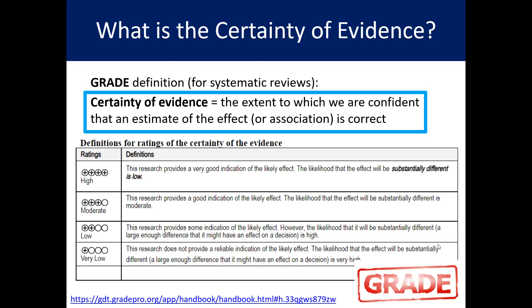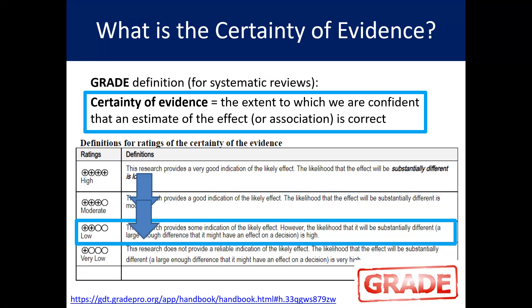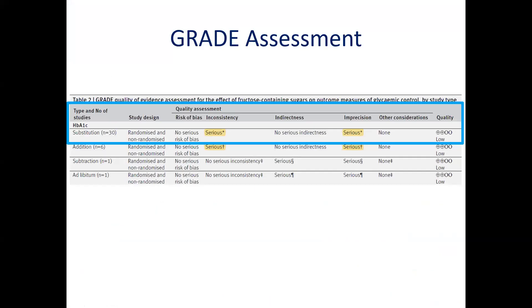So overall in my example, we started at a grade of high since it was an SRMA of controlled trials. We then rated down for inconsistency due to unexplained heterogeneity, and down again for imprecision due to the 95% confidence interval of the overall total effect estimate crossing the minimally important difference. Thus, the overall grade was low for the effect of fructose-containing sugars on HbA1c in substitution trials. In my example, they did perform a GRADE assessment — as you can see in Table 2, the evidence was downgraded for inconsistency and imprecision, resulting in an overall rating of low certainty of evidence.